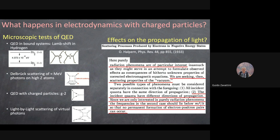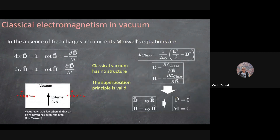What we're interested in is how these effects produce an impact on the propagation of light. Is the speed of light still equal to c? As soon as the idea of vacuum fluctuations emerged, already in the 1930s, Halpern wrote a paper — essentially half an article — saying radiation phenomena in vacuum are of particular interest. He was seeking the scattering properties of vacuum as light propagates, with photons below the electron mass threshold so only virtual pairs are involved.